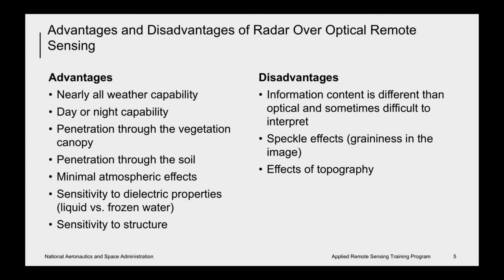Of course, there are also disadvantages with radar. The information content in radar data is different from optical and sometimes difficult to interpret. Radar images also contain speckle — a salt-and-pepper, grainy-type effect — that makes interpretation difficult. Finally, the presence of topography introduces distortions which need to be accounted for. All of these topics will be discussed further along.